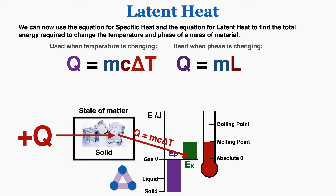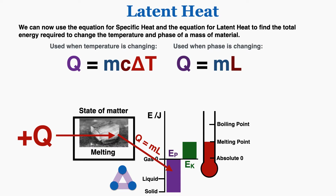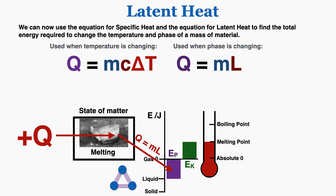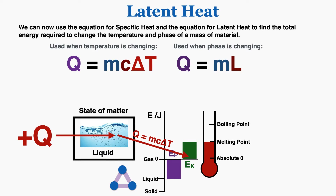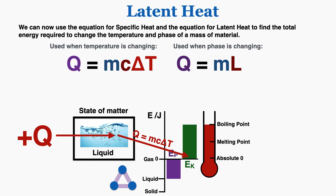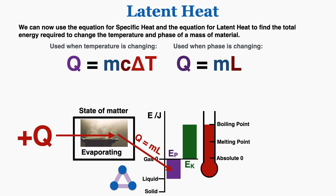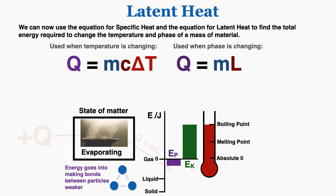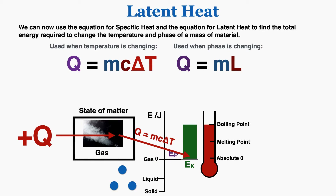When it begins to change its phase, all the energy goes into changing the phase instead of the temperature, and we use Q equals mL instead. This applies as long as the material is changing its phase — from solid to liquid. Once complete, Q equals mc delta T applies again until the temperature hits the boiling point. At the boiling point, energy goes back into changing phase (Q equals mL), and once fully converted to gas, Q equals mc delta T applies for the rest.